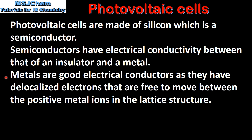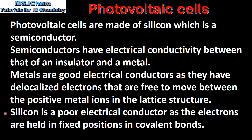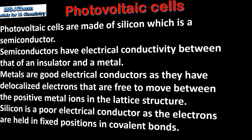Metals are good electrical conductors as they have delocalized electrons that are free to move between the positive metal ions in the lattice structure. Silicon is a poor electrical conductor as the electrons are held in fixed positions in covalent bonds.